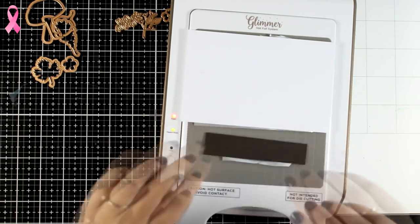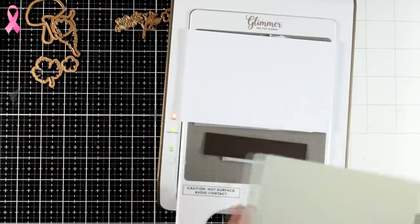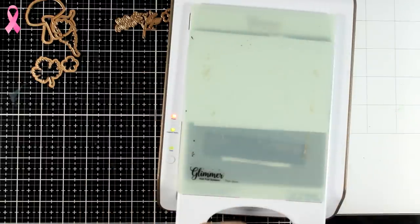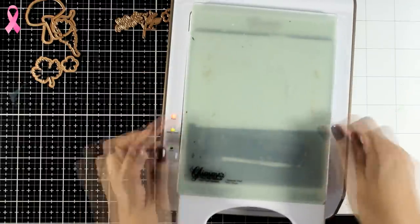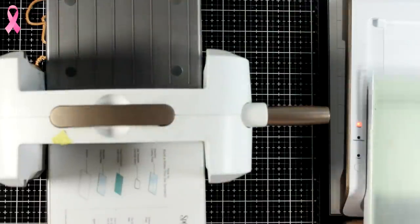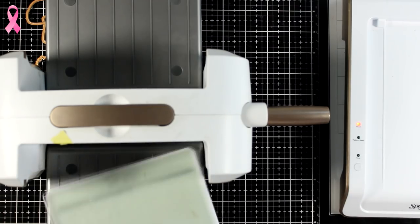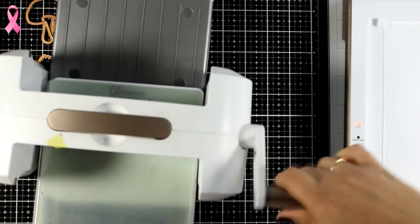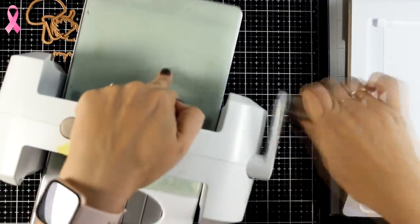Now I'm going to foil everything. I do have a brown cardstock with the sentiment. I will change it into another color later on, but for now I'm creating my sandwich, pressing the button, waiting for that light to stop flashing. Now I'm going to run it through my die cutting machine twice, back and forth.